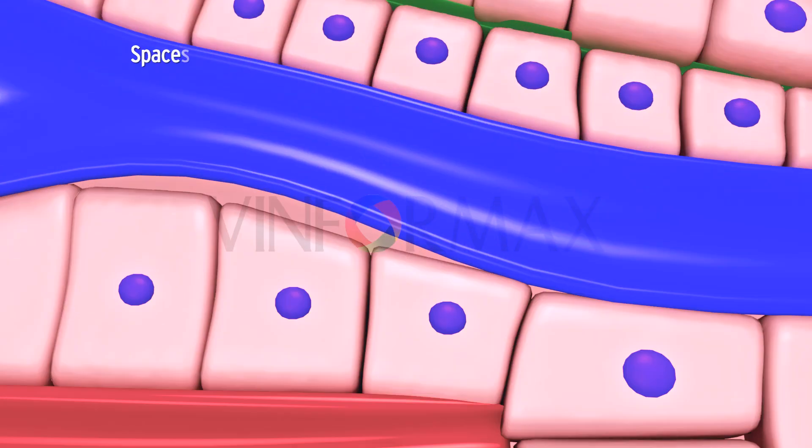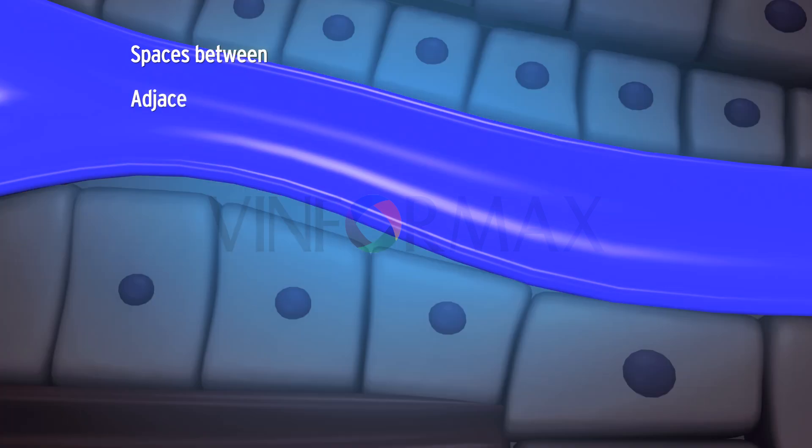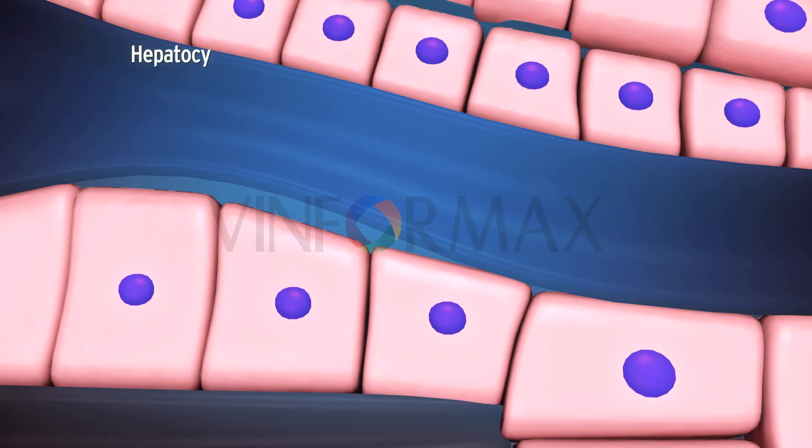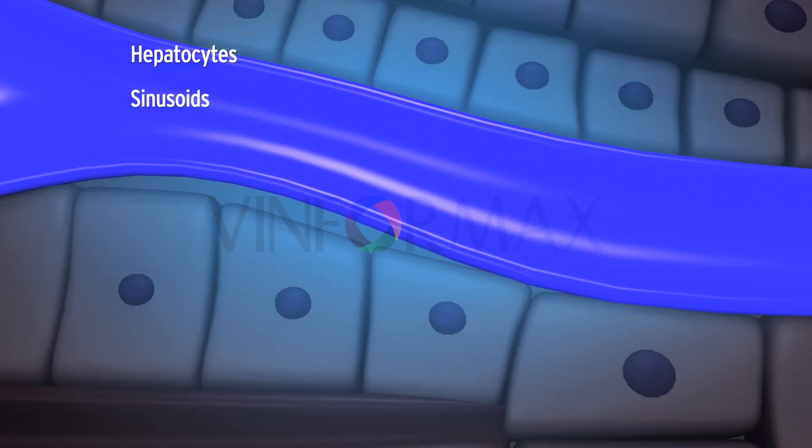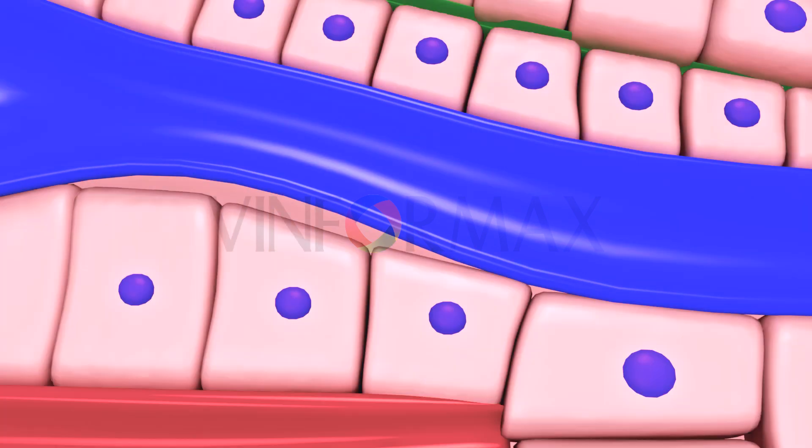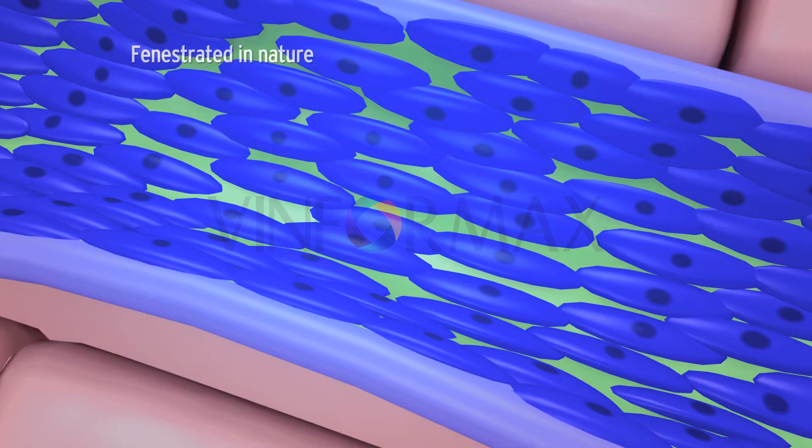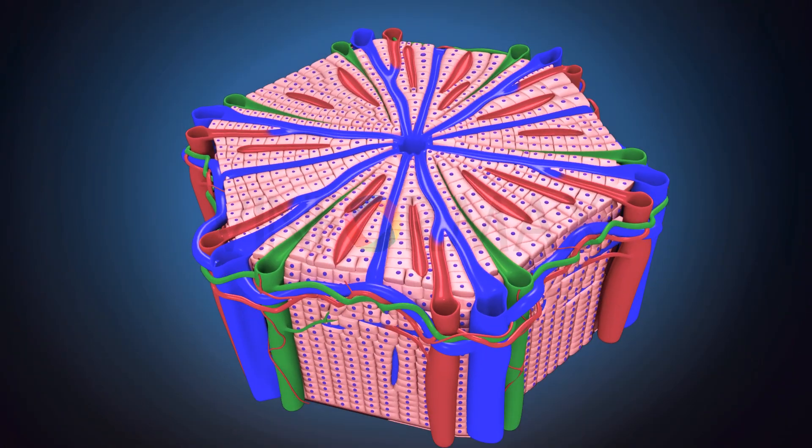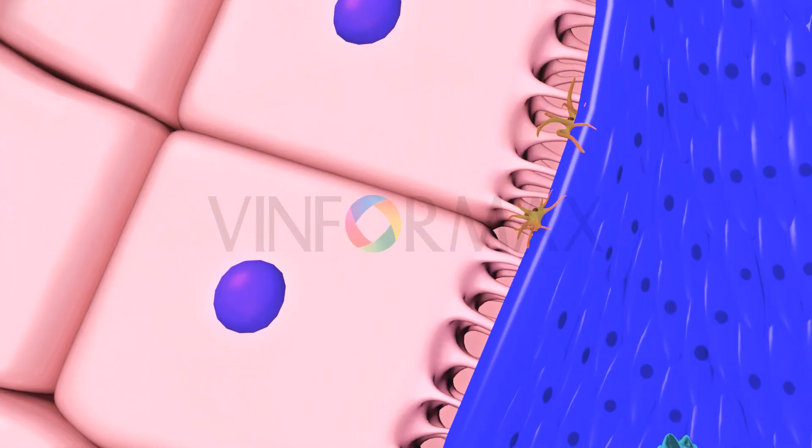The spaces in between the adjacent rows of hepatocytes are sinusoids. Thus, each liver cell is surrounded by sinusoids on two sides. These sinusoids are lined by an endothelium which is fenestrated in nature.